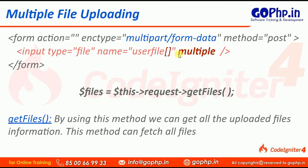Definitely when we are working with multiple files, the name of the input control should be an array. We know that an array can hold multiple values in a single variable — for that same reason we have to take it as an array. If you are not taking this as an array, each file will override the previous one and finally you are going to get only one file into that input field.